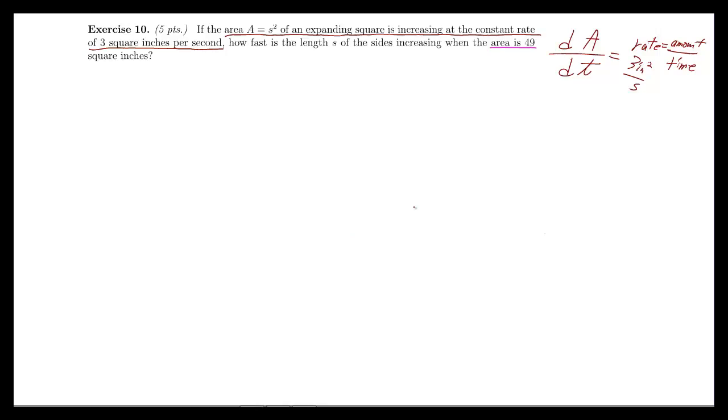All right, we've got a problem here where it's an expanding square that's increasing at the constant rate of 3 square inches per second. So that means we have some sort of square and its area is increasing by 3 square inches per second. That means at some point it looks like this, and then another point starts to get bigger, and bigger, and bigger. And we know the rate at which it's increasing. We know that rate is dA over dt, and it's 3 inches squared per second.